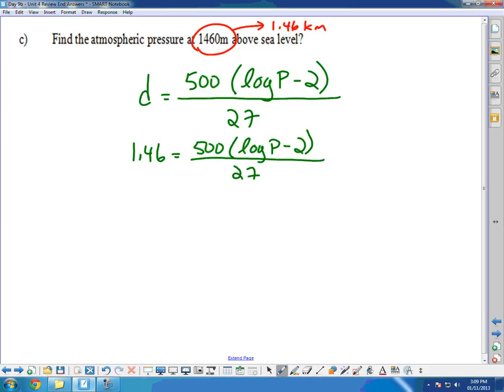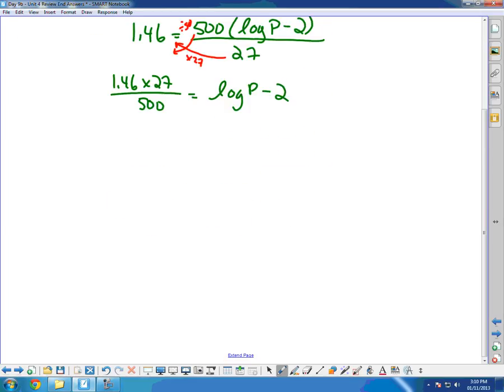You now need to go off and put everything on one side and leave your log P on its own. So the steps we're going to do this all in one step. It's divided by 27, so we're going to multiply by 27 and get rid of this, so we're going to divide by 500. So 1.46 times 27 divided by 500, that's going to leave me with just a log P minus 2. Do this in my calculator. I get 0.07884 equals log P minus 2.